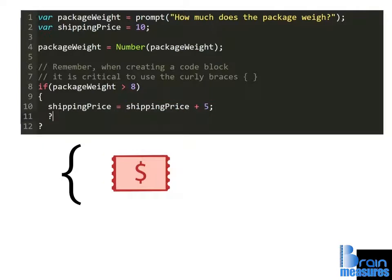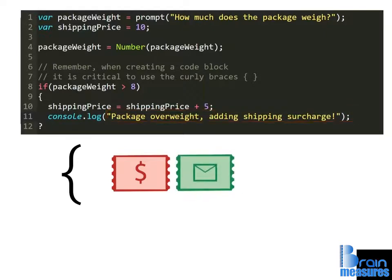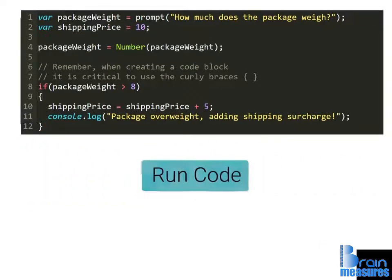On the next line, immediately after the mathematical expression, write a console.log instruction. Inside its parentheses, add the message 'package over weight, adding shipping surcharge.' The last step is to close the code block using the closing curly brace. This step is critical or the program won't work. Run your code and see what happens.